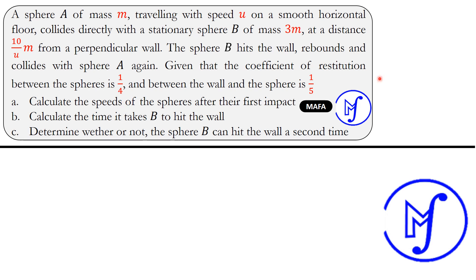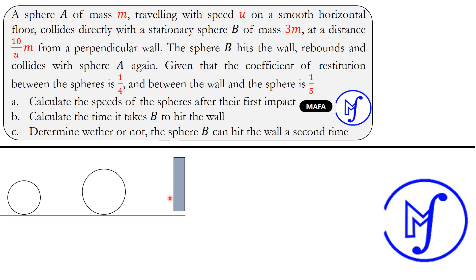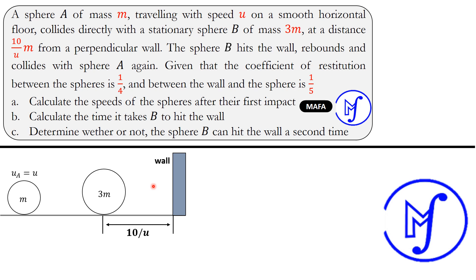The first thing we are going to do is draw the diagram of what is happening. We have a horizontal ground, sphere A, sphere B, and a wall which is perpendicular to the ground — meaning it is vertical. Sphere A is initially moving with speed u and collides directly with sphere B, whose mass is 3m. The mass of sphere A is m, the mass of sphere B is 3m, and sphere B is at a distance of 10/u meters from the wall. Sphere A has initial velocity u while sphere B has initial velocity zero, as it is at rest.